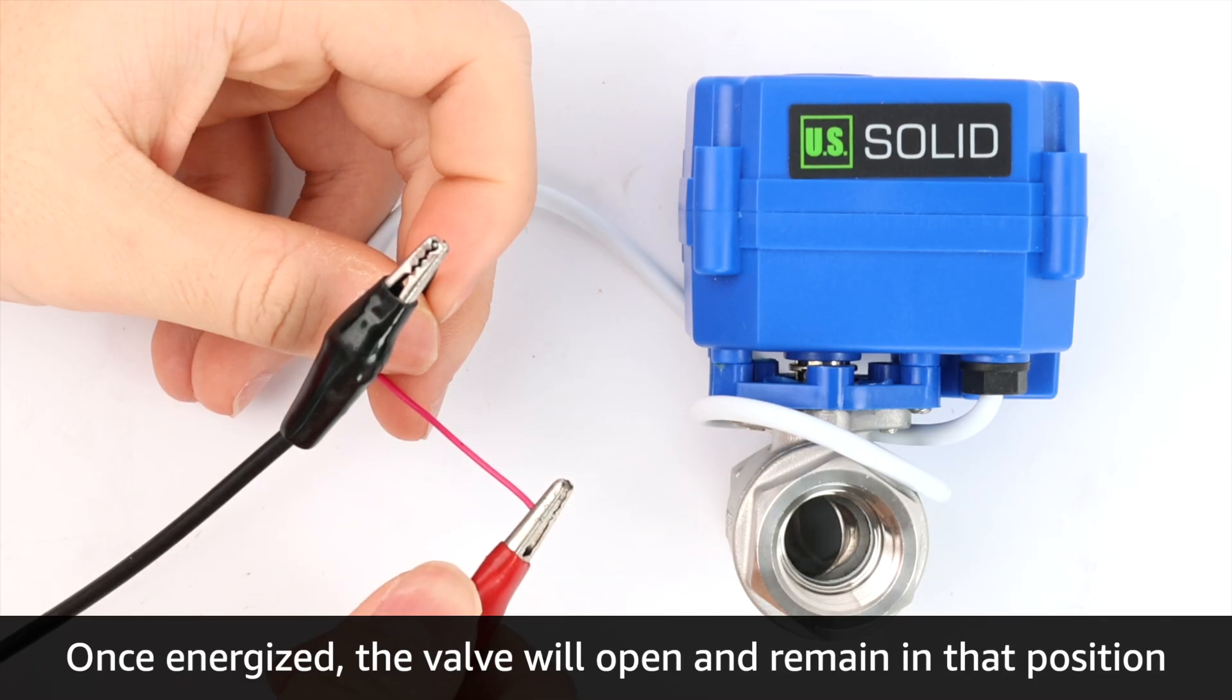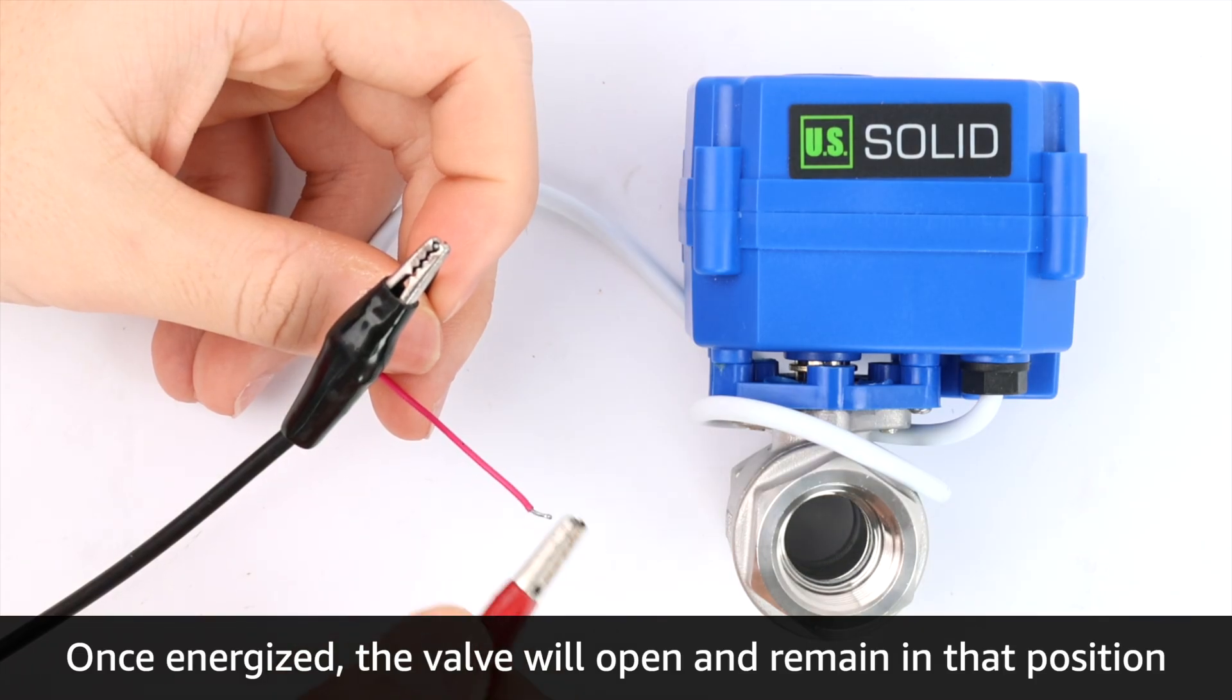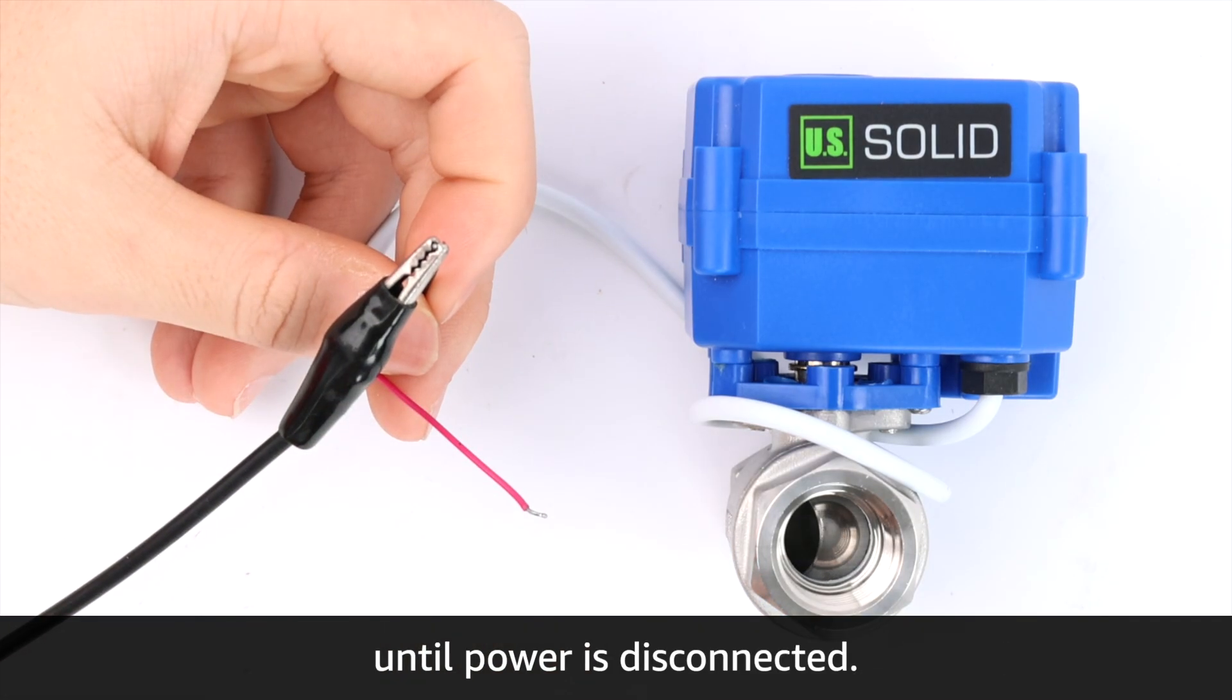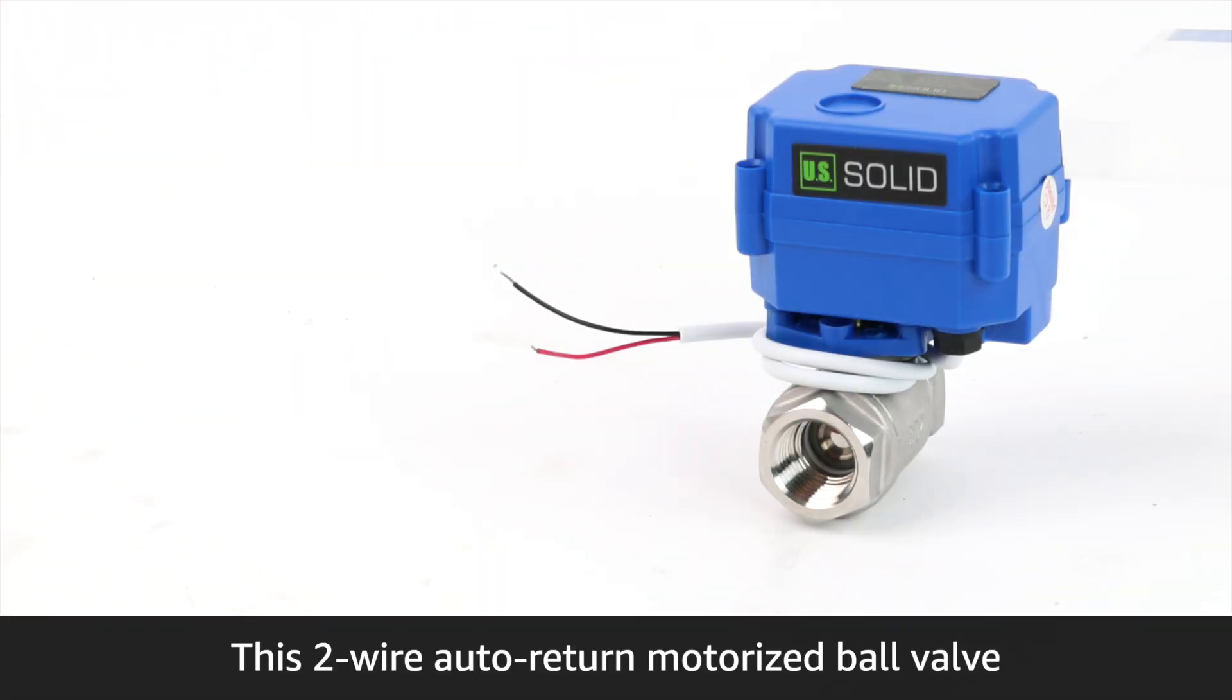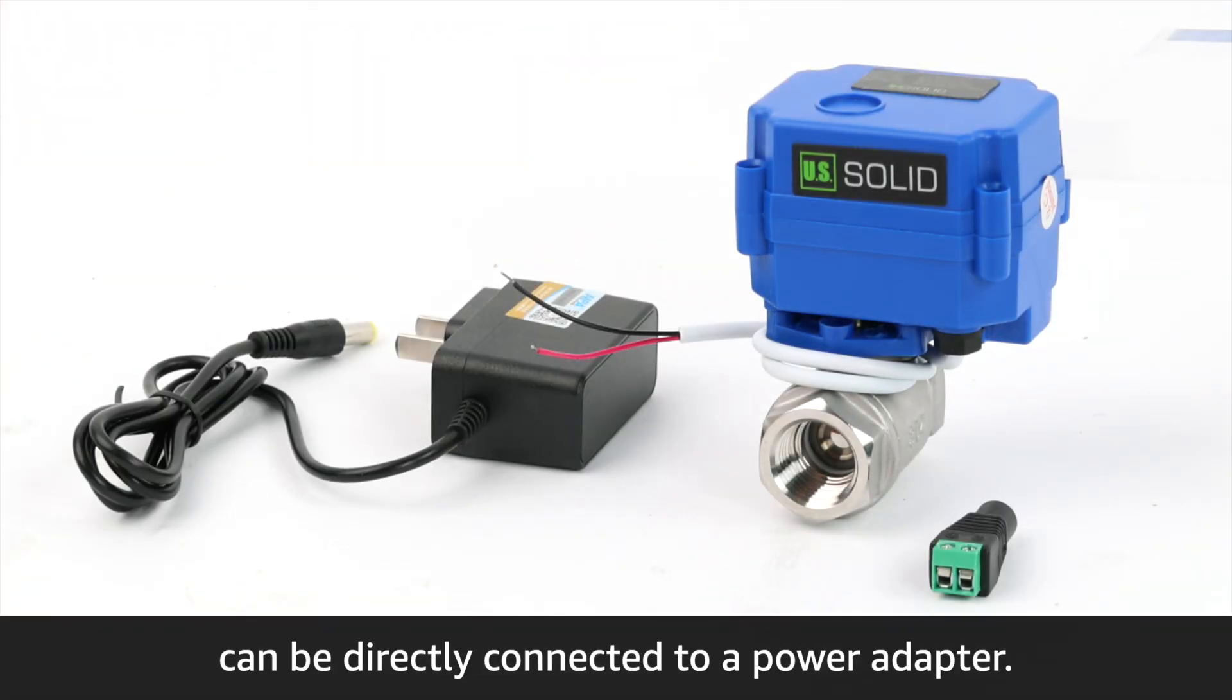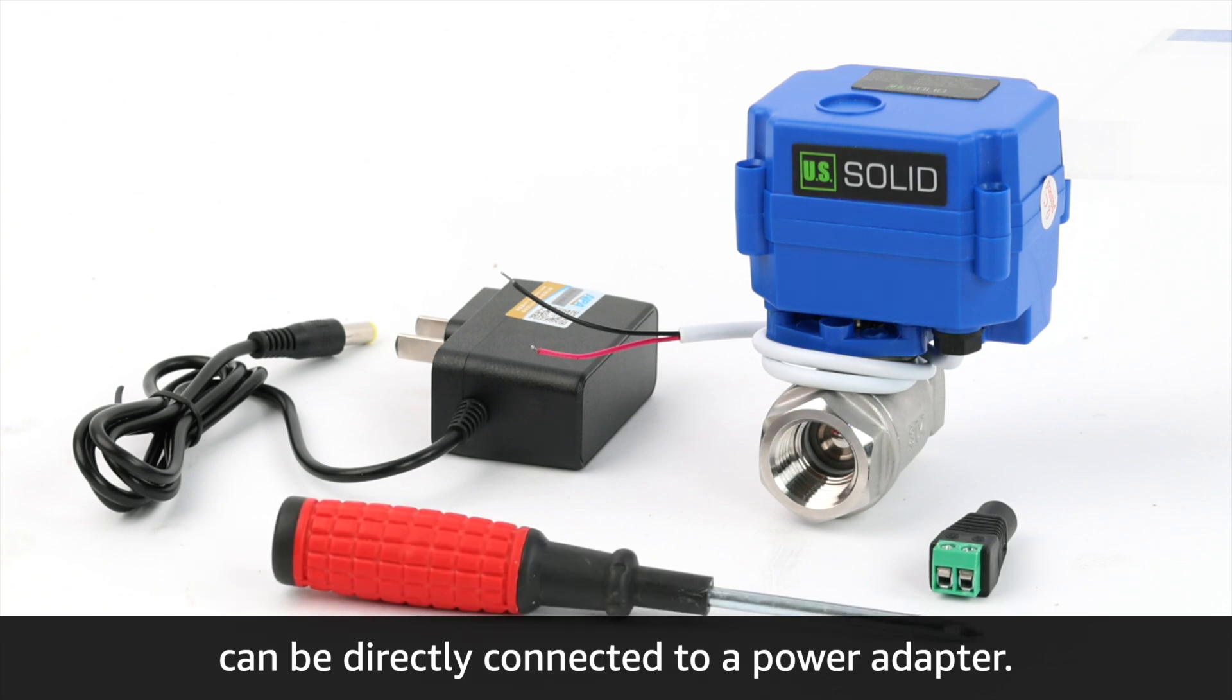Once energized, the valve will open and remain in that position until power is disconnected. This two-wire auto-return motorized ball valve can be directly connected to a power adapter.